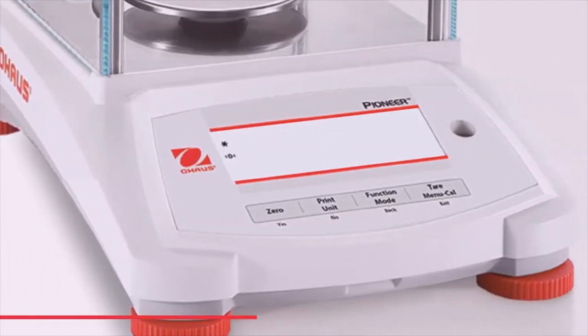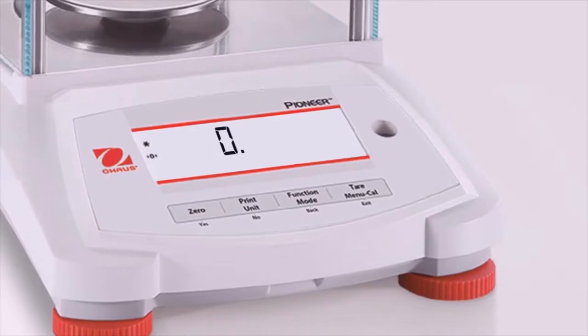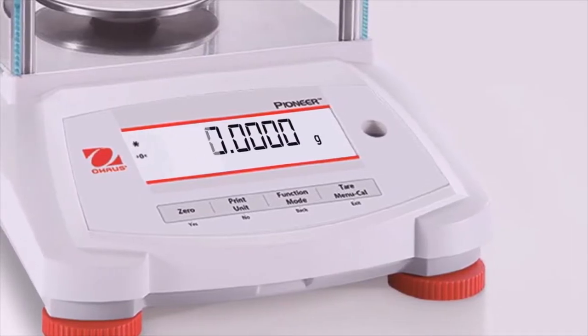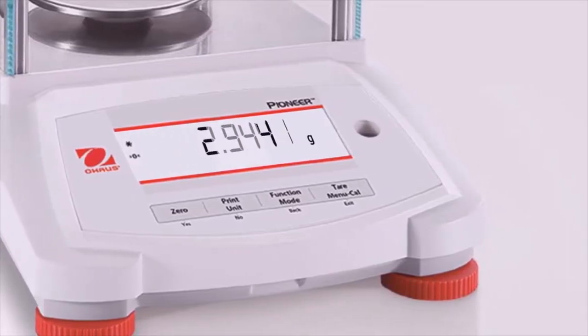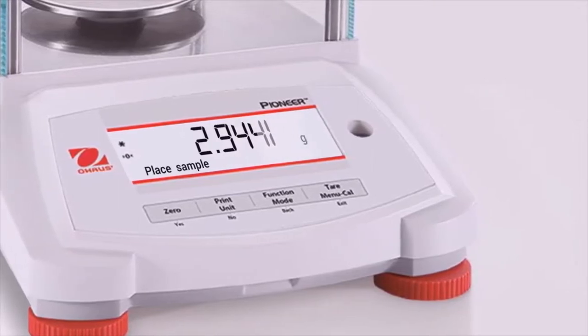A brightly lit dual line display shows the weight in an easy-to-read manner, while a dot matrix second line provides additional information or guidance prompts to the user.